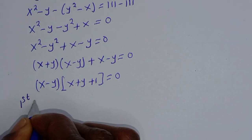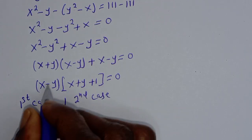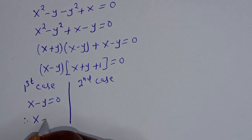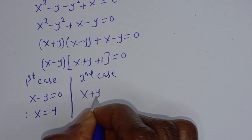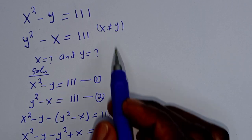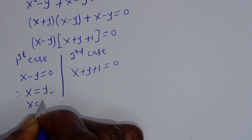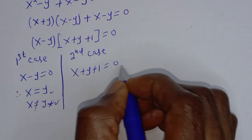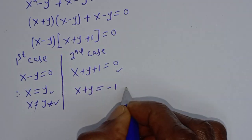Then, x minus y is common — let's bring it out. We get (x minus y)(x plus y plus 1) equals 0. There are two cases. The first case is x minus y equals 0, therefore x equals y. The second case is x plus y plus 1 equals 0. But the question says x is not equal to y, so x equals y is undefined. We consider the second case: x plus y equals minus 1. Let's call this equation 3.